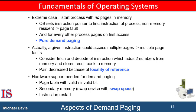The hardware to support demand paging is the same as the hardware for paging and swapping. You need a page table, which can mark entries invalid through a valid-invalid bit or a special value of protection bits. It also uses secondary memory to hold those pages not present in main memory. The secondary storage is usually a high-speed hard drive, known as a swap device, and the section of storage used for this purpose is also known as swap space.